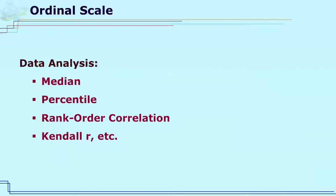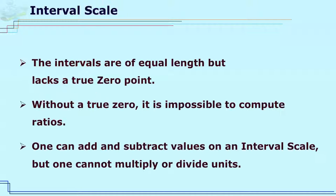The data of the ordinal scale can be analyzed by computing median, by computing percentiles, by computing rank difference method of correlation. It can also be analyzed with the help of Kendall's tau, etc. Next scale is the interval scale, which is higher than the ordinal scale.